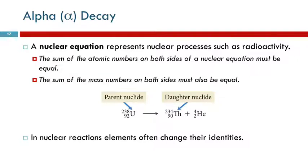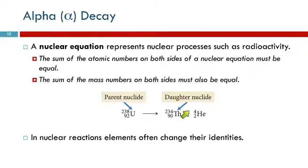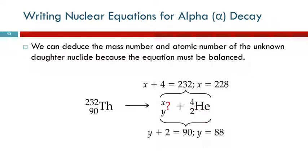If we say there is alpha decay, that means an alpha particle is removed. We know what the alpha particle is, so we look at the mass numbers and atomic numbers and figure out what they need to be so they add up correctly on both sides. Then we identify the resulting element based on its atomic number. The equation must be balanced in terms of mass numbers and atomic numbers.